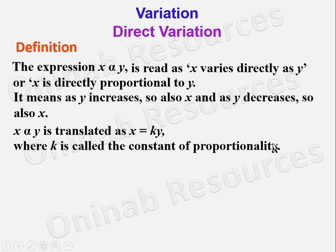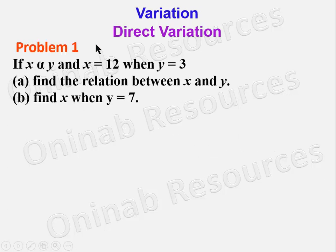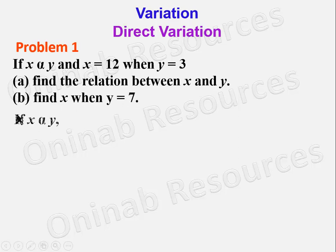X α Y is translated as X is equal to KY, where K is called the constant of proportionality or constant of variation. So we take our first problem on direct variation: if X varies directly as Y and X is equal to 12 when Y is equal to 3, (a) find the relation between X and Y, (b) find X when Y is equal to 7.